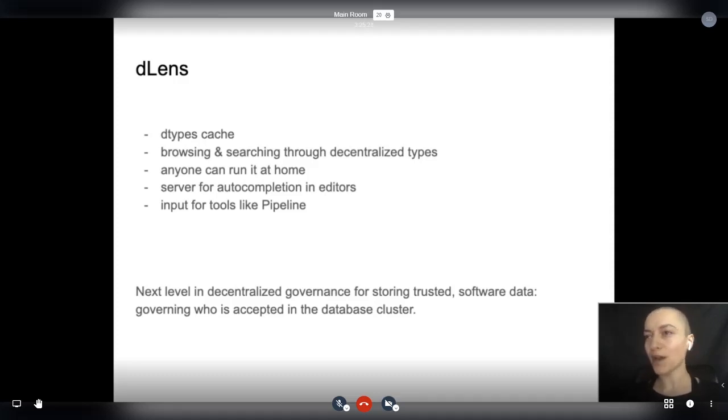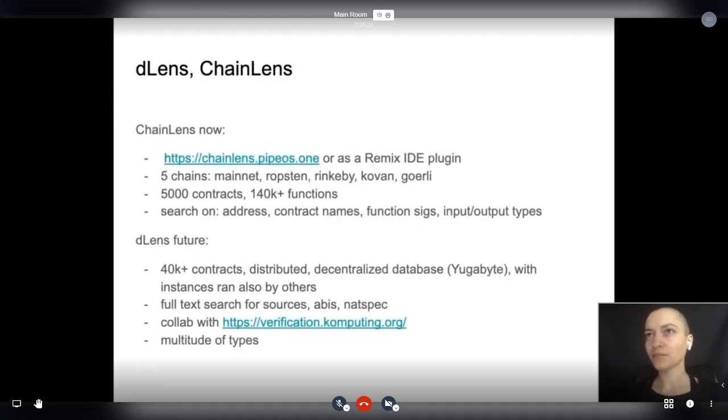Having one company control all the source code is begging for problems, and I for one do not want the next WASM package manager to follow suit. Our current version of Chain Lens was derived from our work on the Pipeline contract finder, where we needed the ABIs of already deployed contracts. If you do not know how to use Chain Lens with Pipeline, check out my YouTube videos. Chain Lens only has two types: contracts and functions. dLens will have multiple types, and we have around 40,000 contracts waiting to be published on the decentralized database with better search.